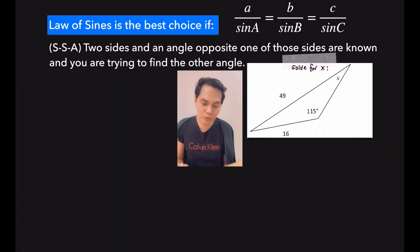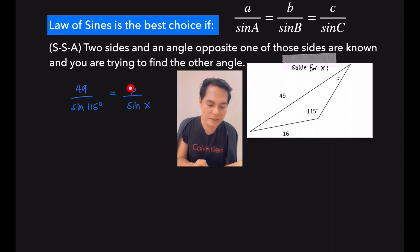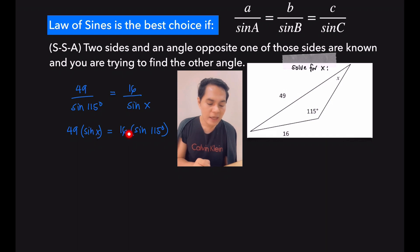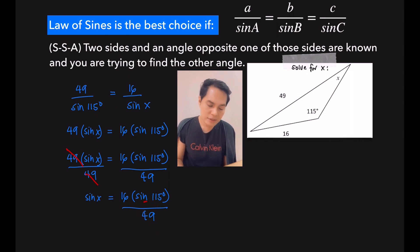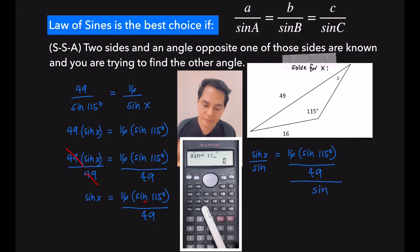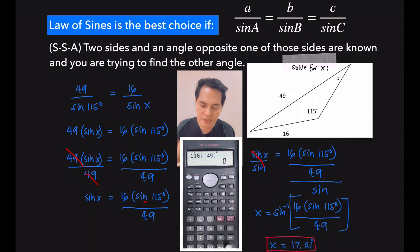To solve for x in this illustration, just look at the given and compare it to the formula. The side 49 is opposite to the angle 115°, so we write 49 over sine 115° equals 16 over sine x, since 16 is the side opposite to angle x. Cross-multiplying gives 49 times sine x equals 16 times sine 115°. Dividing both sides by 49, we get sine x equals 16 times sine 115° divided by 49. Taking the inverse sine, using a calculator, the value of x is equal to 17.21 degrees.